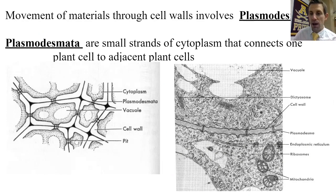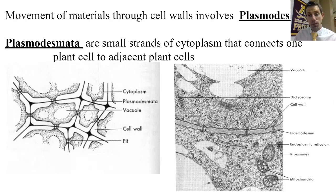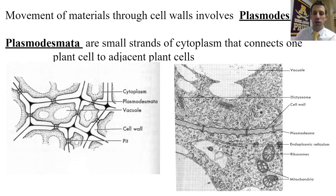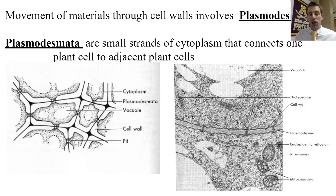Plant cells can be connected together by structures called plasmodesmata — little tunnels or bridges that connect adjacent plant cells. In microscopic images, plasmodesmata appear like bridges over a river, where the river represents the space between cells (the middle lamella). Plasmodesmata are useful for sending materials back and forth between cells, like water or the products of photosynthesis, allowing communication between adjacent plant cells.